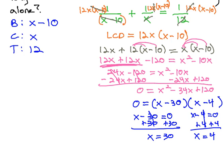So we have two possibilities. Either 30 or 4 is the time it takes for x or Cosmo to complete the job.